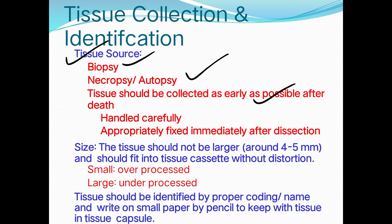The tissue should fit into the tissue cassette without distortion. If it is too small, over-processing may occur; if too large, under-processing may happen. Tissue must be identified by proper coding and name. Using a pencil, write the coding or name of the tissue on a small piece of paper and keep it inside the cassette along with the tissue during processing.